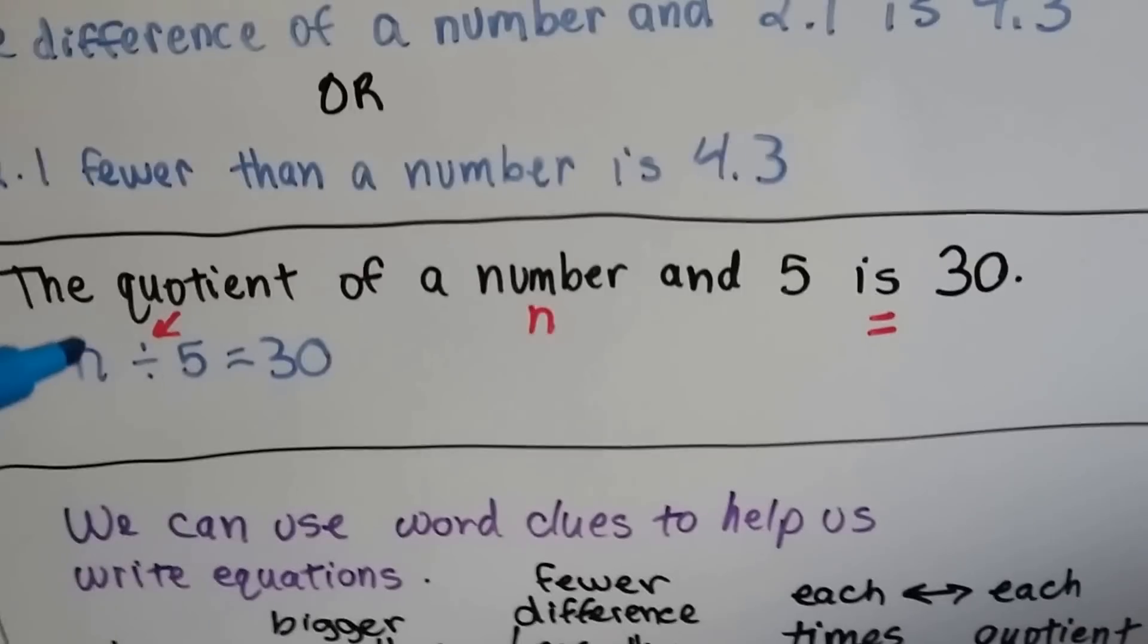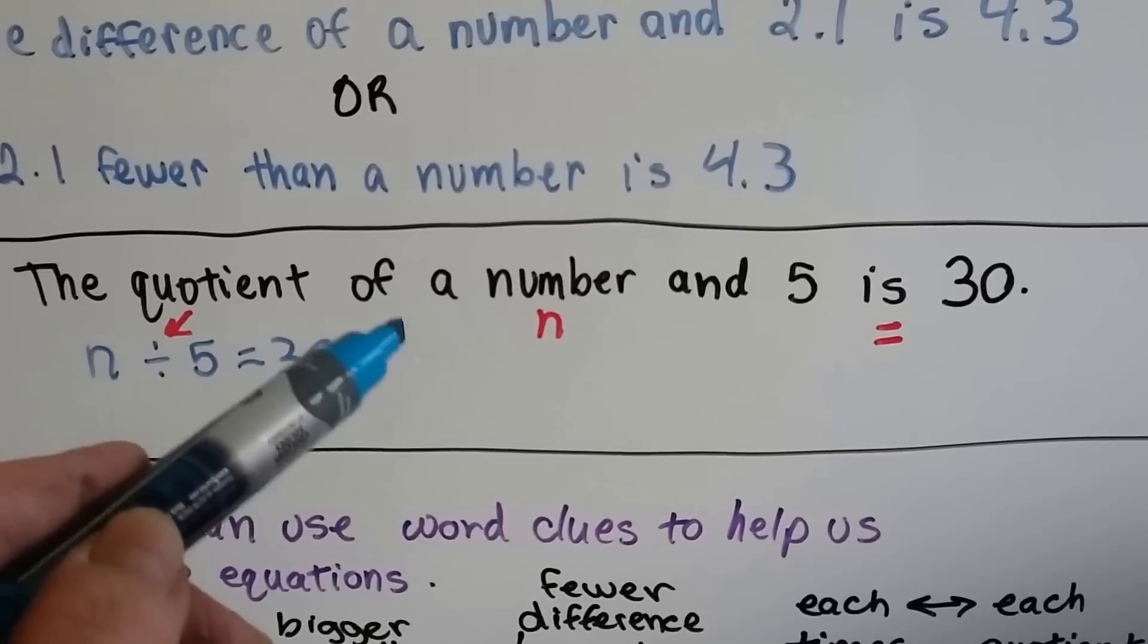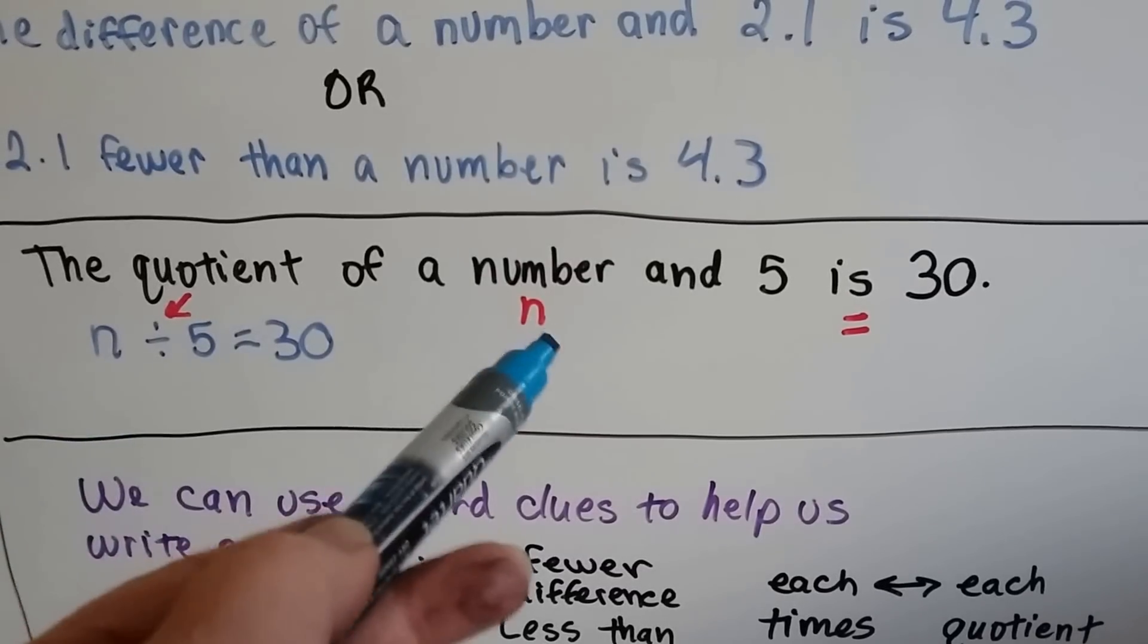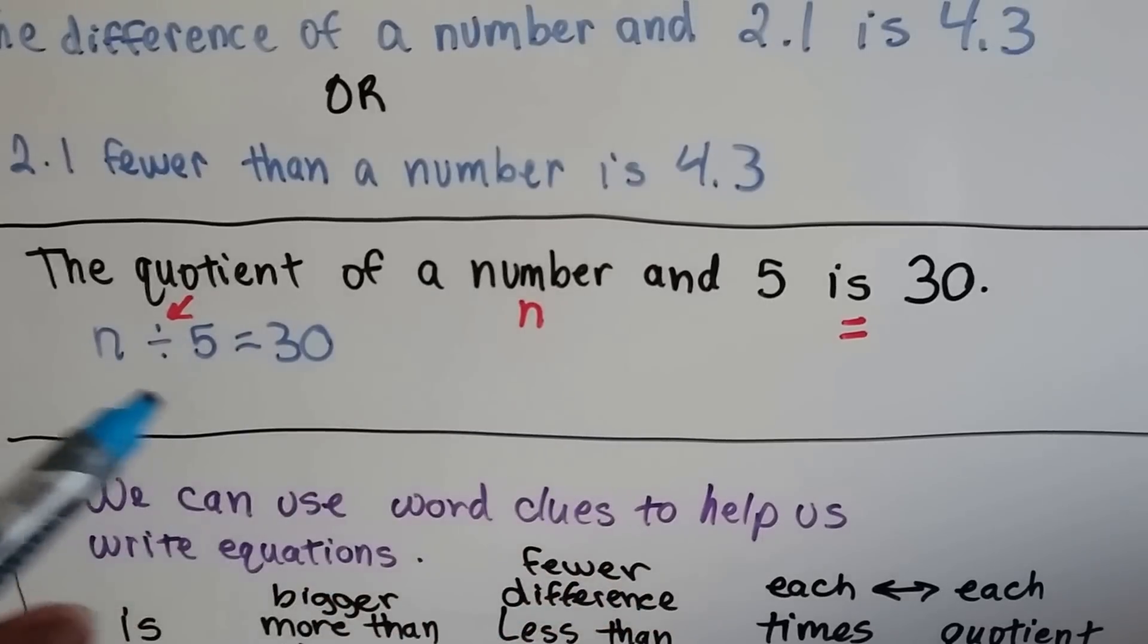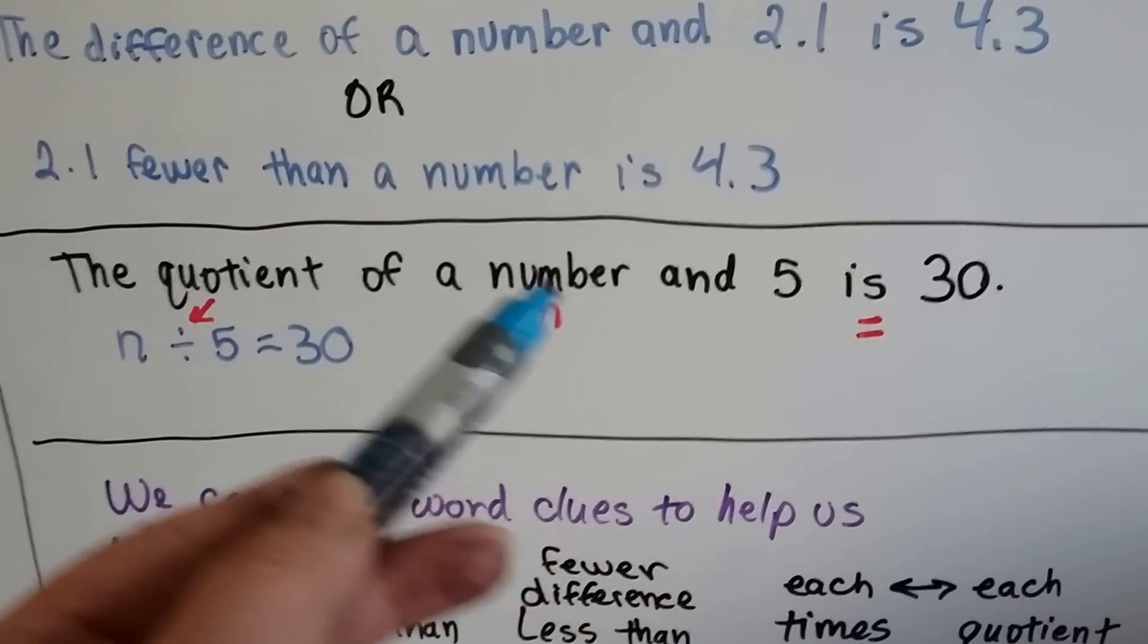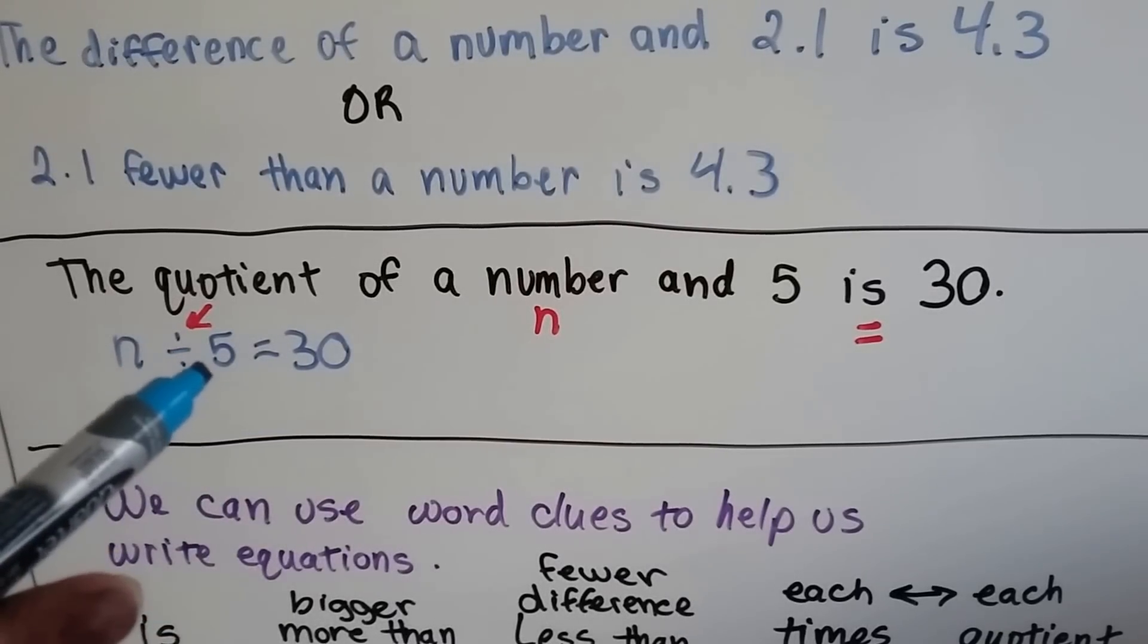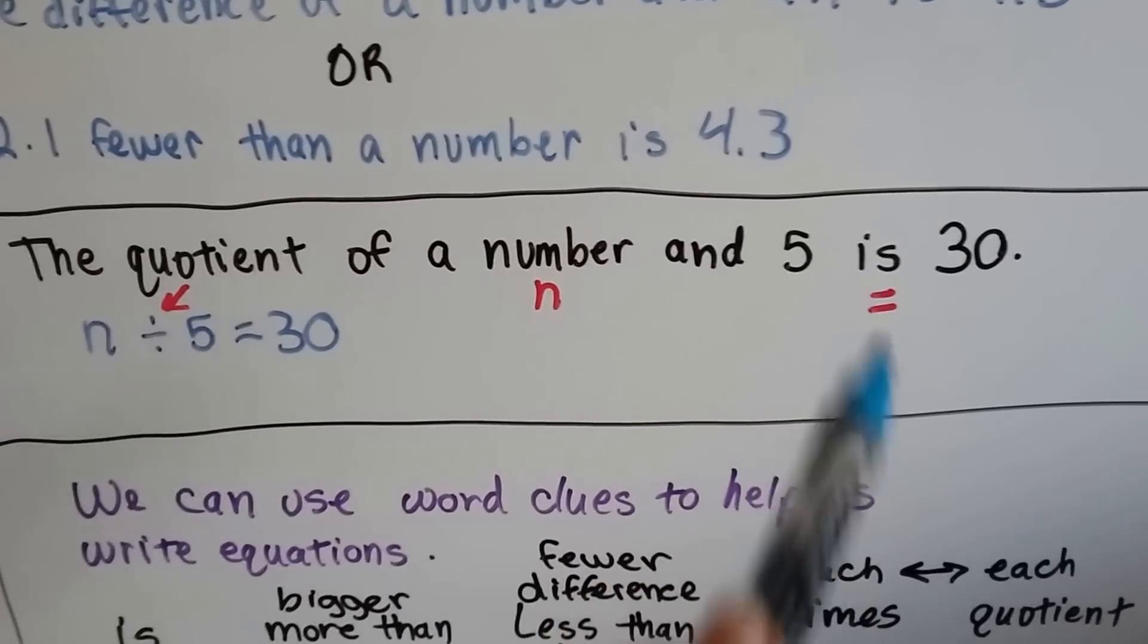A quotient of a number and 5 is 30. Quotient tells us we're going to use division. Number, we're going to use N or any variable we want, because a variable is just an alphabet taking the place of a number that we don't know what it is. So, the quotient of a number and 5 is 30. So, that means we need to get a number and 5 and make it 30. Something divided by 5 equals 30. The is is equals.